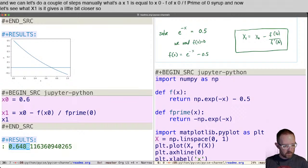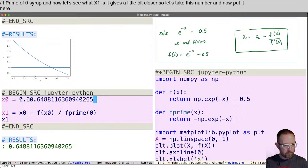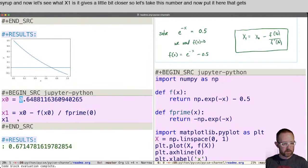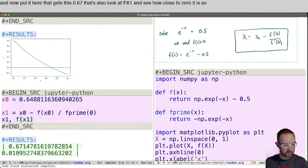So let's take this number and now put it here. That gets to the 0.67. Let's also look at f of x1 and see how close to zero it is. So we have 0.01. All right.